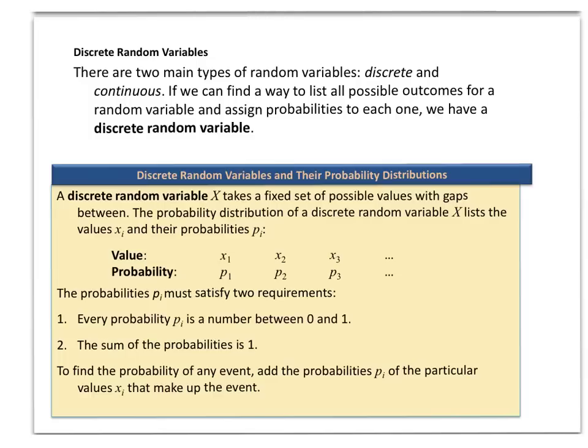The probability distribution of a discrete random variable lists their values and their probabilities, just like the previous example where I listed all the ways you can get heads and the probabilities of each. Probabilities must satisfy two requirements: every probability must be a number between zero and one, and the sum of all probabilities must equal one for it to be a legitimate probability distribution.